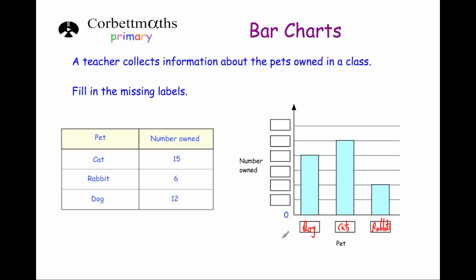Next we're going to put the numbers on the vertical axis. We know there are 6 rabbits, 12 dogs and 15 cats. We've got two boxes next to each other and it goes up by 3. The numbers need to go up by the same amount each time, so they all go up by 3. Starting at 0 at the bottom: 3, 6, 9, 12, 15 and 18. That's all the numbers labelled.